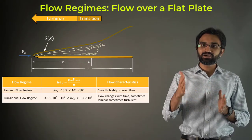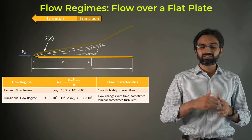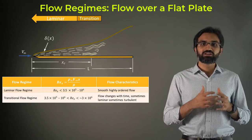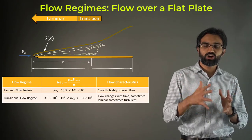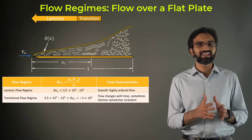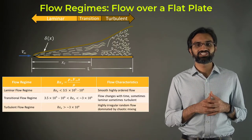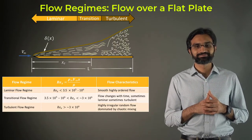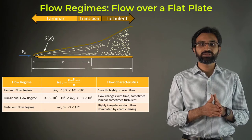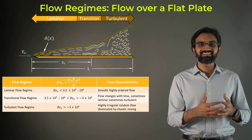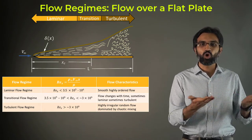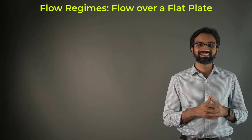Further downstream, the fluid is characterized by highly random motion dominated by chaotic flow mixing, and this is the turbulent region. Identifying these flow regimes is an important aspect of understanding convective heat transfer over a flat plate.